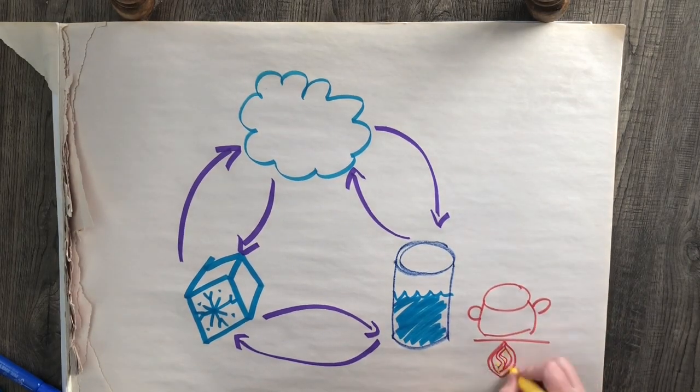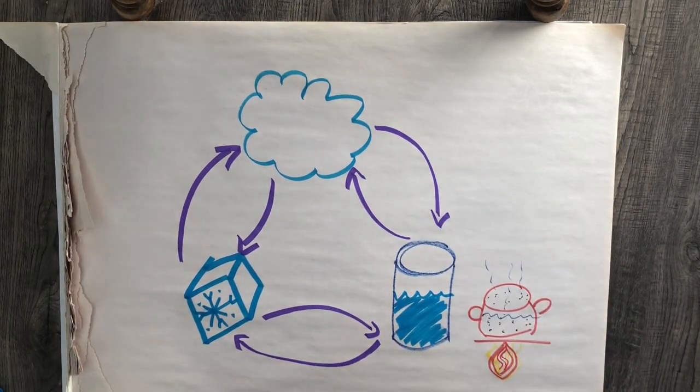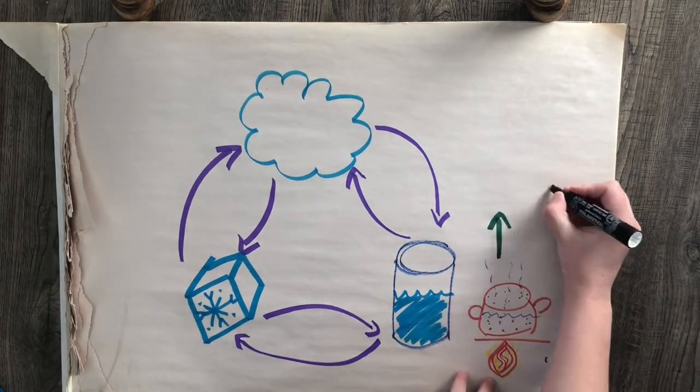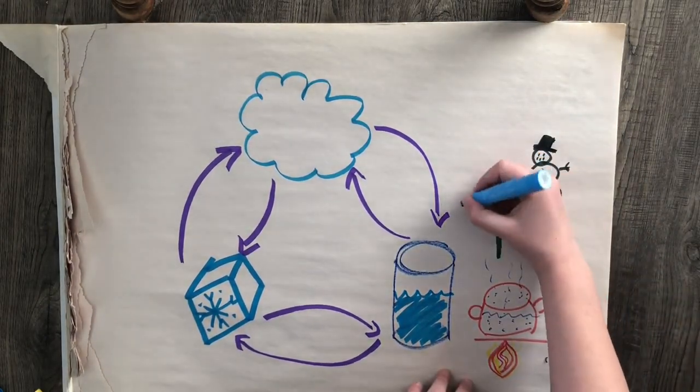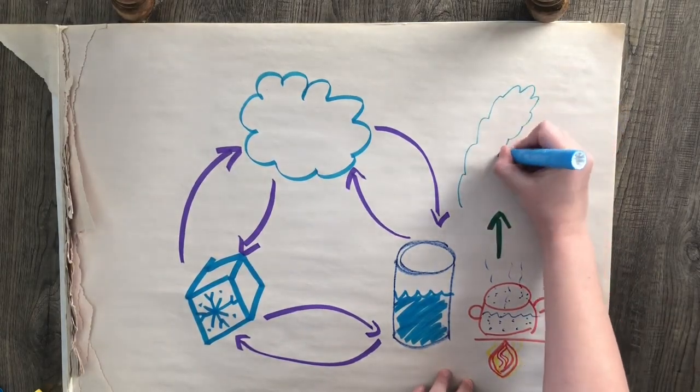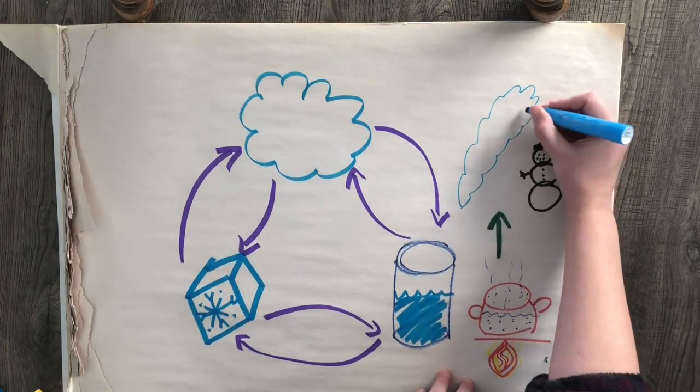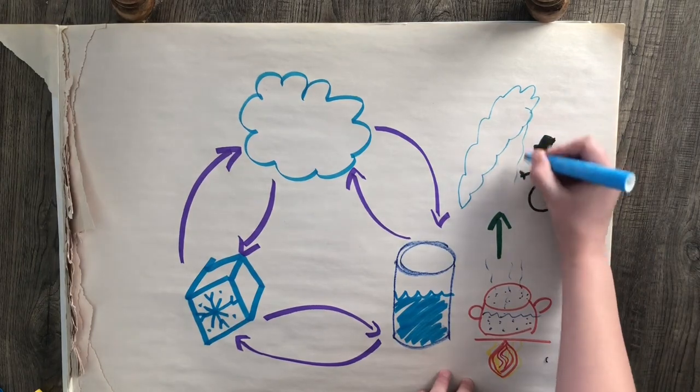During our experiment, we saw evaporation occurring really quickly. When I threw the boiling water up into the air, it quickly changed from a liquid to a gas. In this case, water vapor. You may have noticed small streams of water falling out of the cloud.